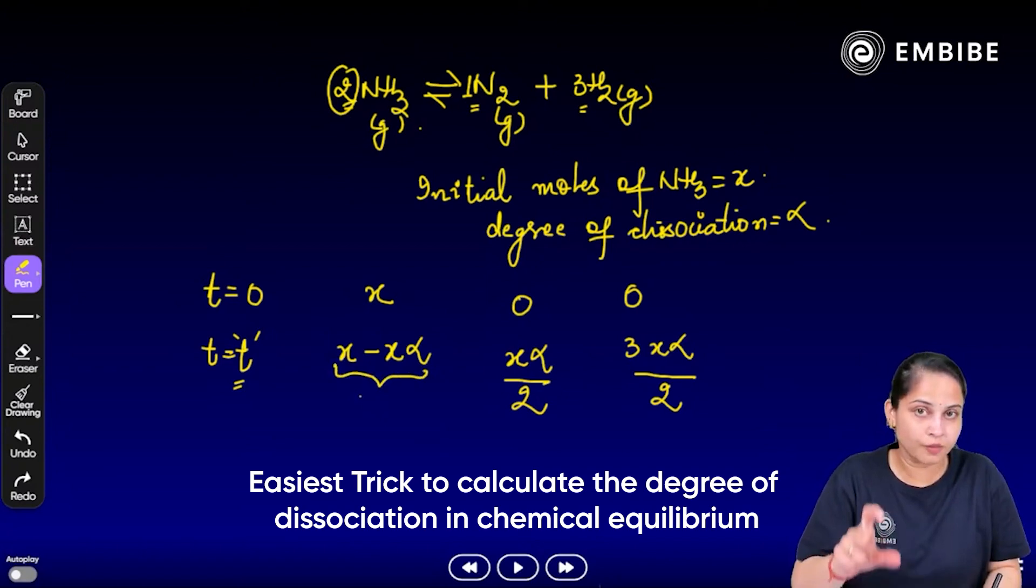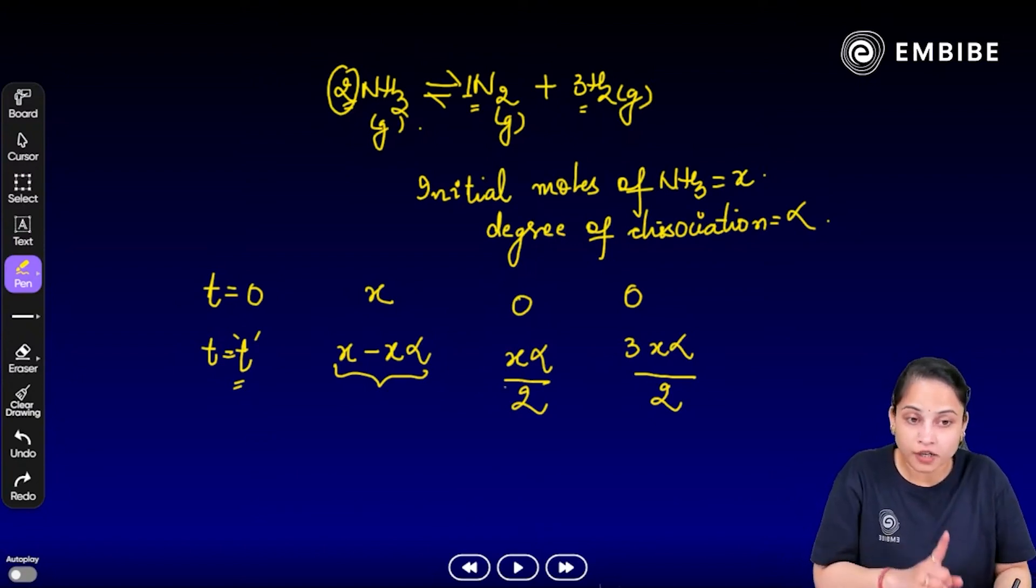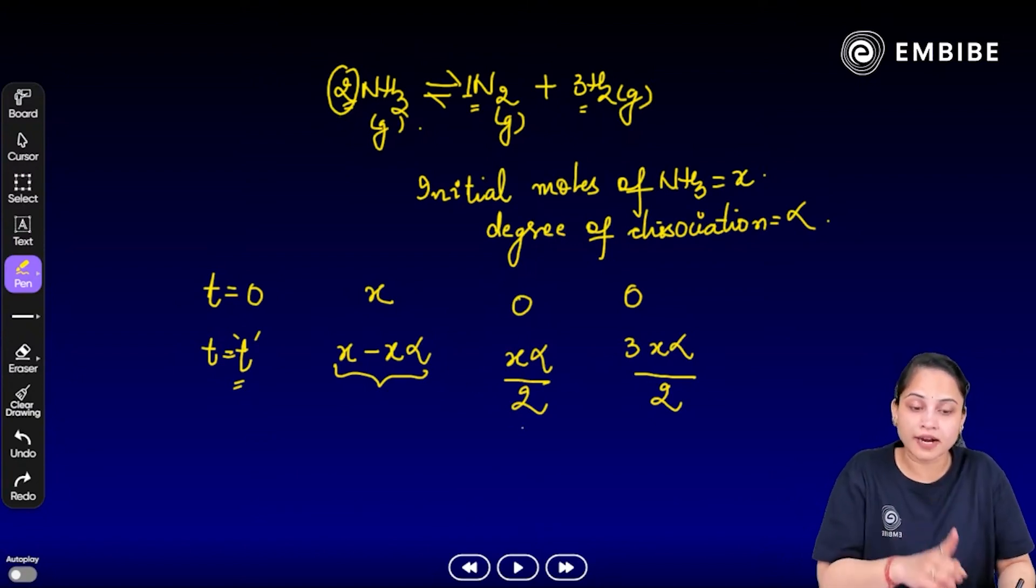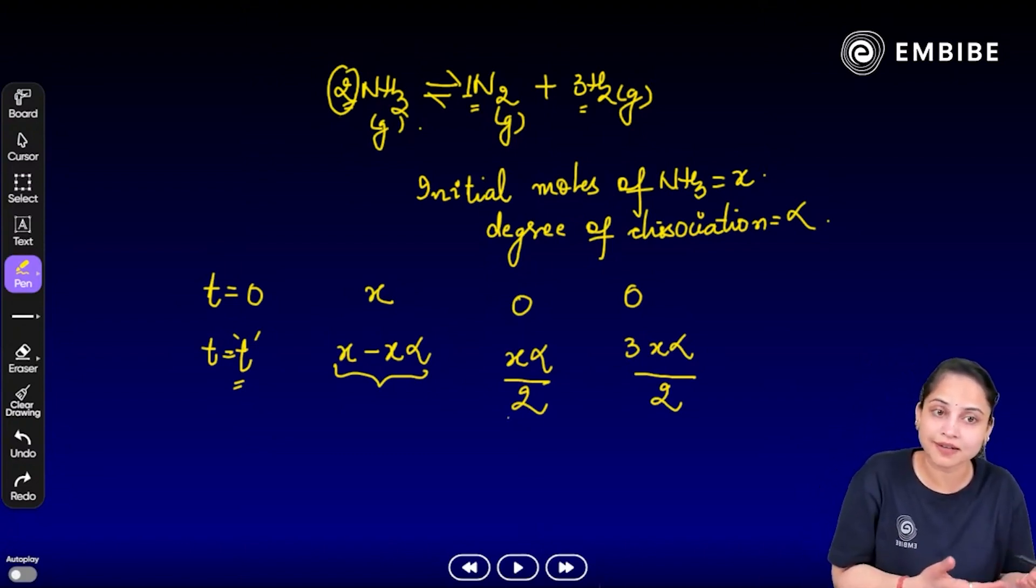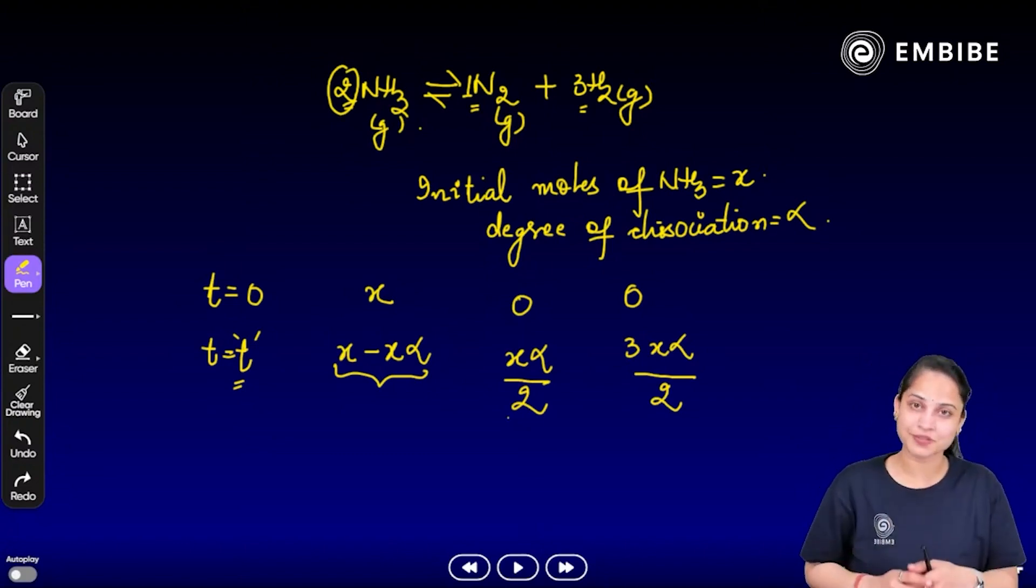Here we do not do reactant's stoichiometric coefficient. Then it will be x alpha and this will be 3 x alpha. And you divide them by stoichiometric coefficient of reactant. So, what have we got here? Here we have our number of moles. This is the trick for dissociation.